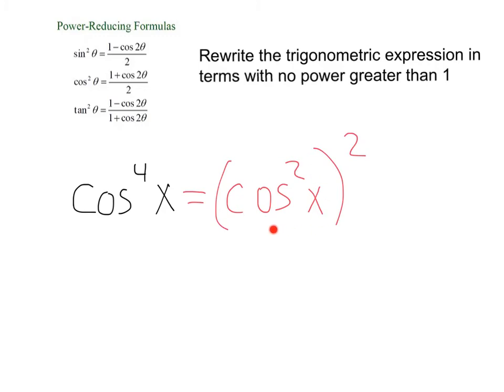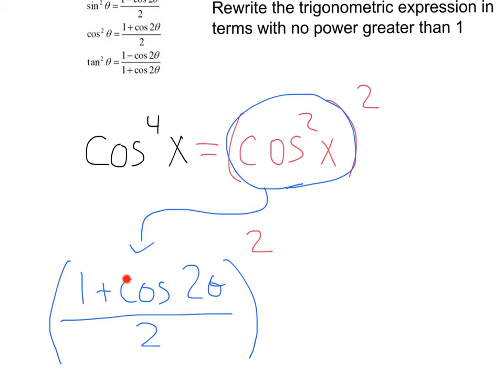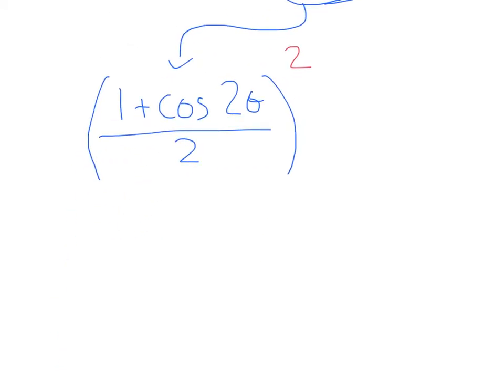And now, we can apply the cosine squared identity. Doing that, we'll get 1 plus cosine 2 theta over 2, all squared. Now, we just need to work that out.